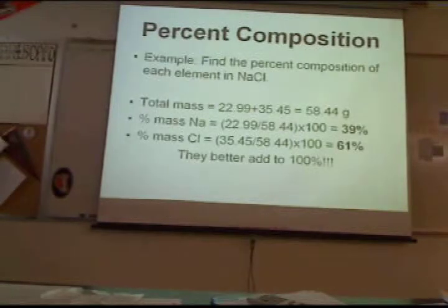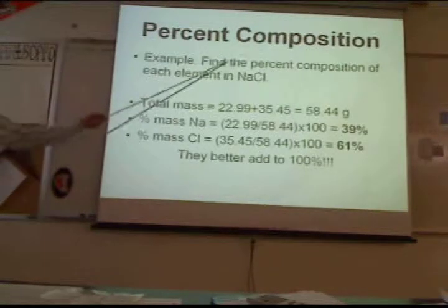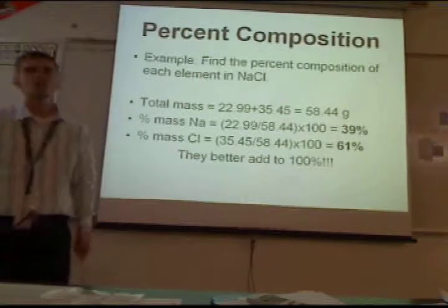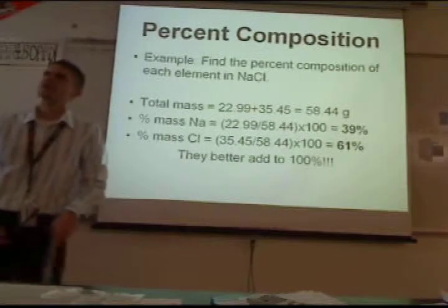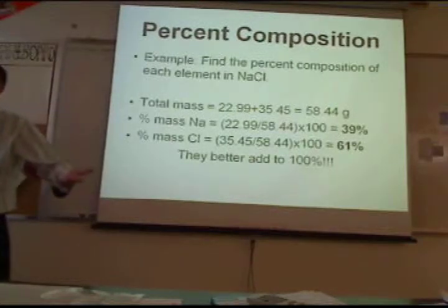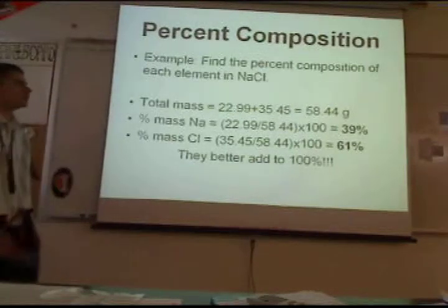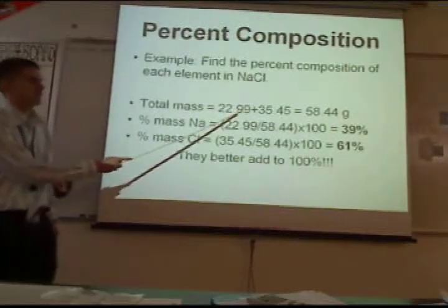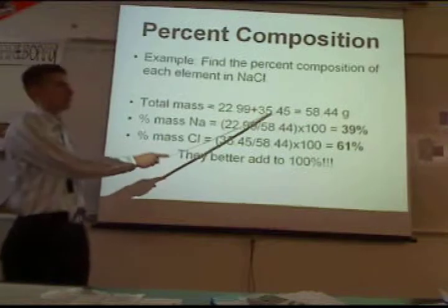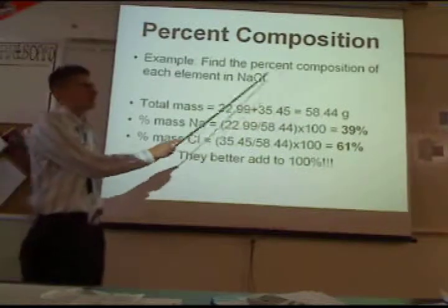So if you want to find the percent composition of each element in NaCl, first you've got to know the mass of NaCl. The mass of NaCl is the mass of Na plus the mass of Cl.